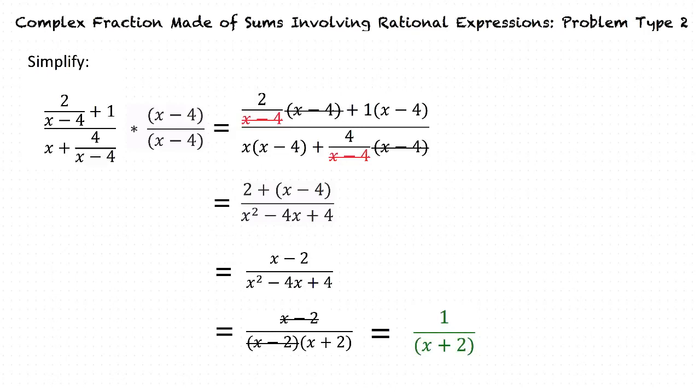So just to make sure I have this down, we begin by finding the least common denominator of the numerator and denominator to remove the fractions. Then we distribute the least common denominator into the numerator and denominator and cancel out our common factors. We then combine like terms and simplify as much as we can.